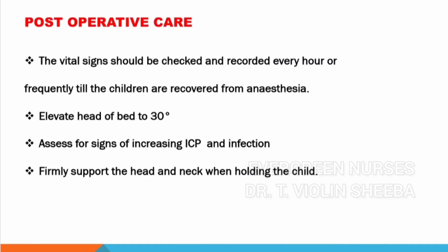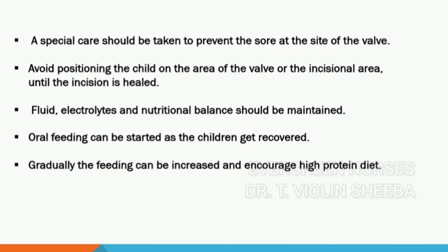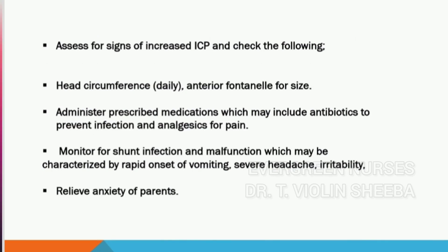In postoperative care, check vital signs hourly to two-hourly and record them. Elevate the head of the baby at 30 degrees. Check the baby for any signs and symptoms, support the head and shoulder, and give special care to the shunt area. Avoid positioning the child to lie on the incisional area. Keep the baby nil per oral initially; maintain fluid and electrolytes through IV fluids, then start oral feeding with small and frequent feeds. Encourage a protein-rich diet and assess for any evidence of increased intracranial pressure. Daily assess head circumference and anterior fontanelle for any bulging.